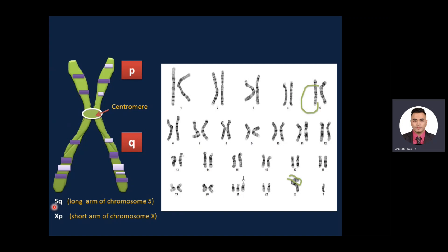Let's take another example: 5q stands for the long arm of chromosome 5. And if you have a location on the sex chromosome, there is no number — you say X. So 'Xp' means the short arm of chromosome X, since p stands for petite.